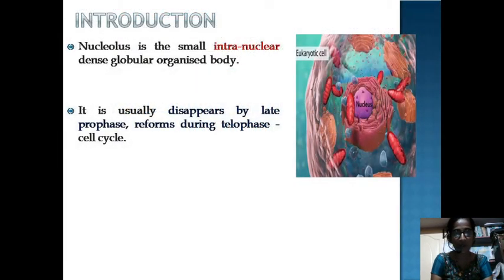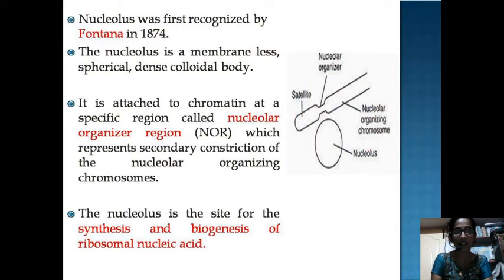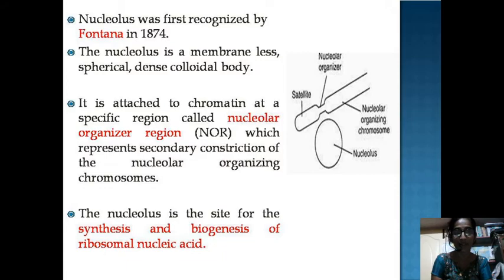The Nucleolus is a small intranuclear dense globular organized body. It usually disappears by late prophase and reforms during the telophase of the cell cycle. In the year 1874, the Nucleolus was first recognized by Fontana. The Nucleolus is a membraneless spherical dense colloidal body, associated at a specific region called the Nucleolar Organizer Region, which represents the secondary constriction of the Nucleolar Organizing Chromosome. The main function of the Nucleolus is as a site for the synthesis and biogenesis of ribosomal RNA.